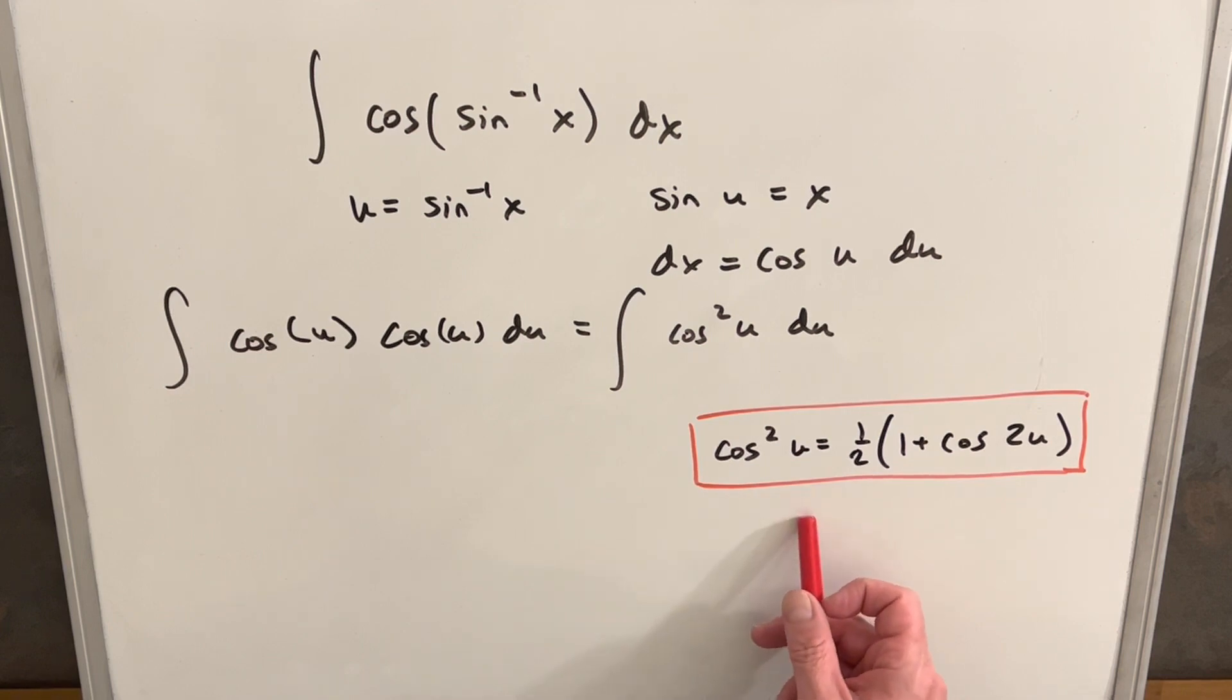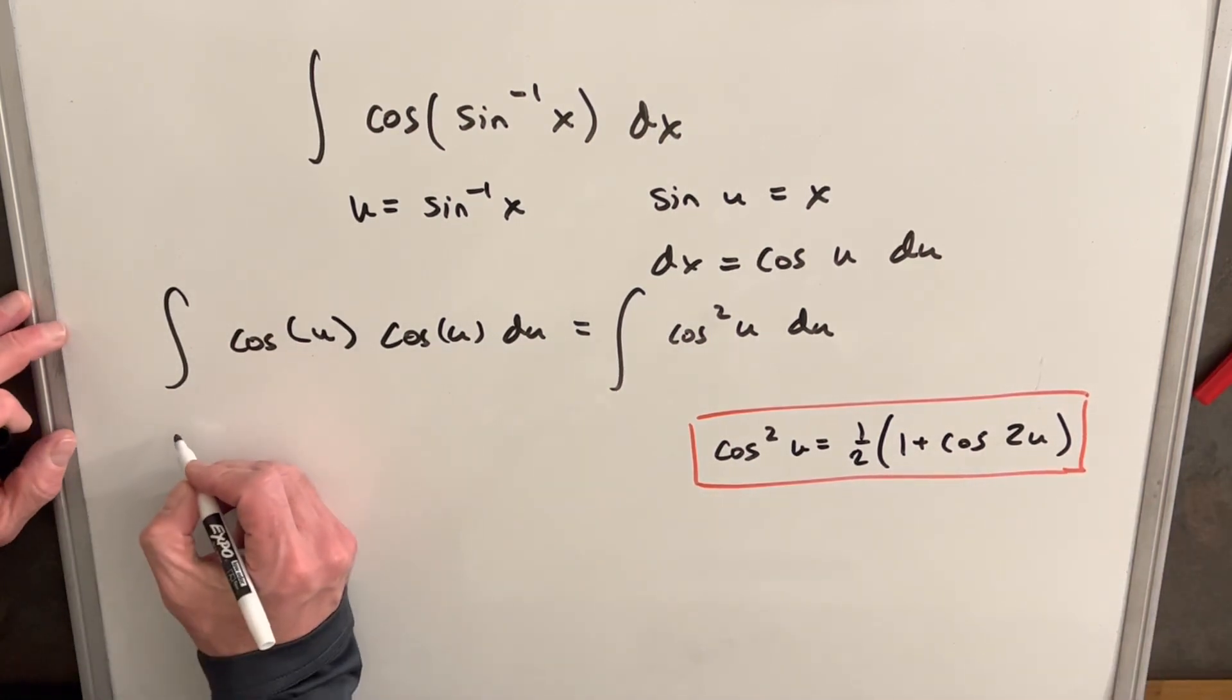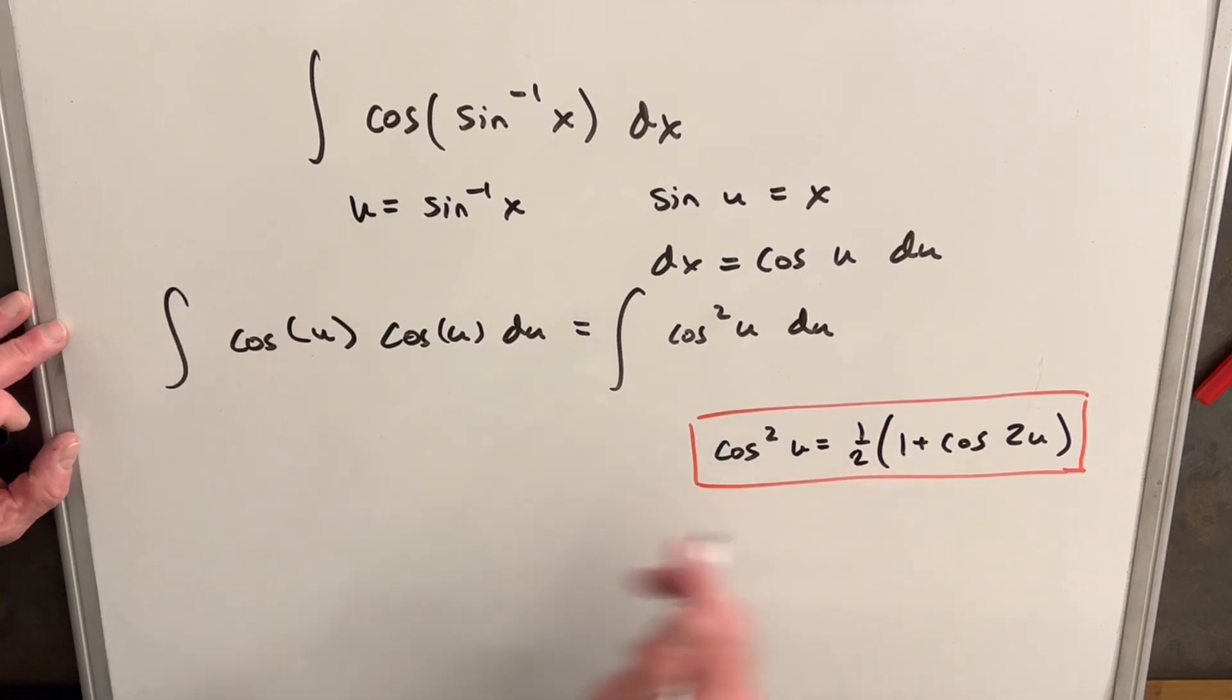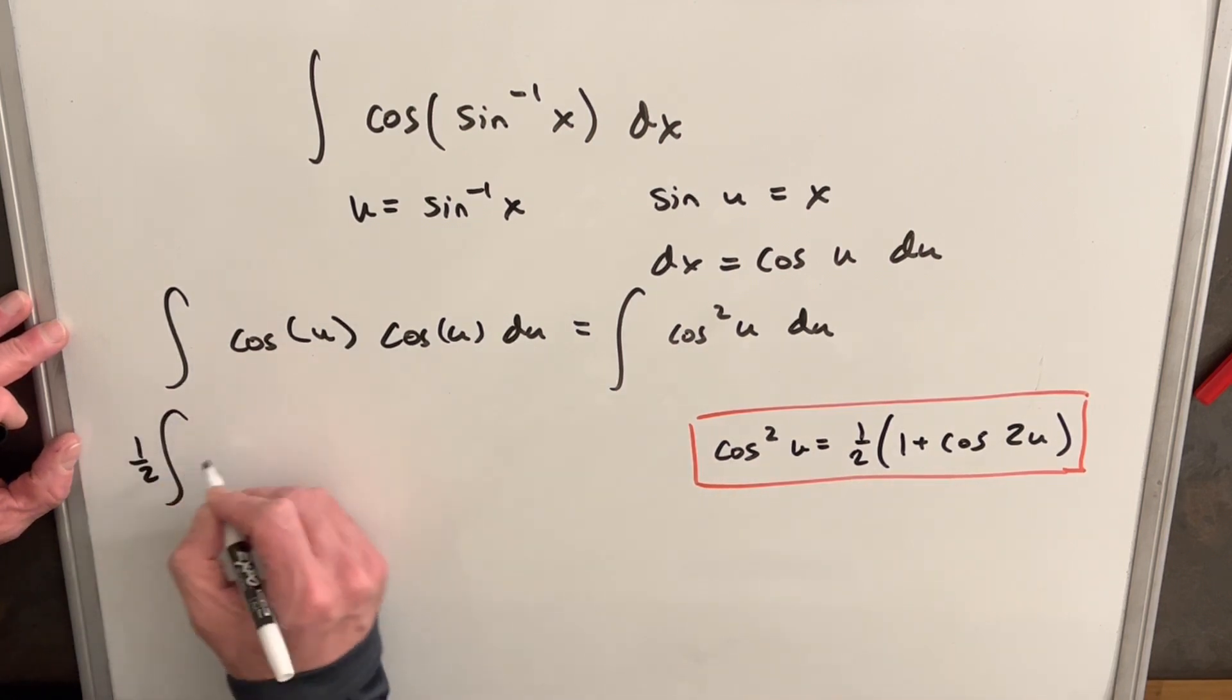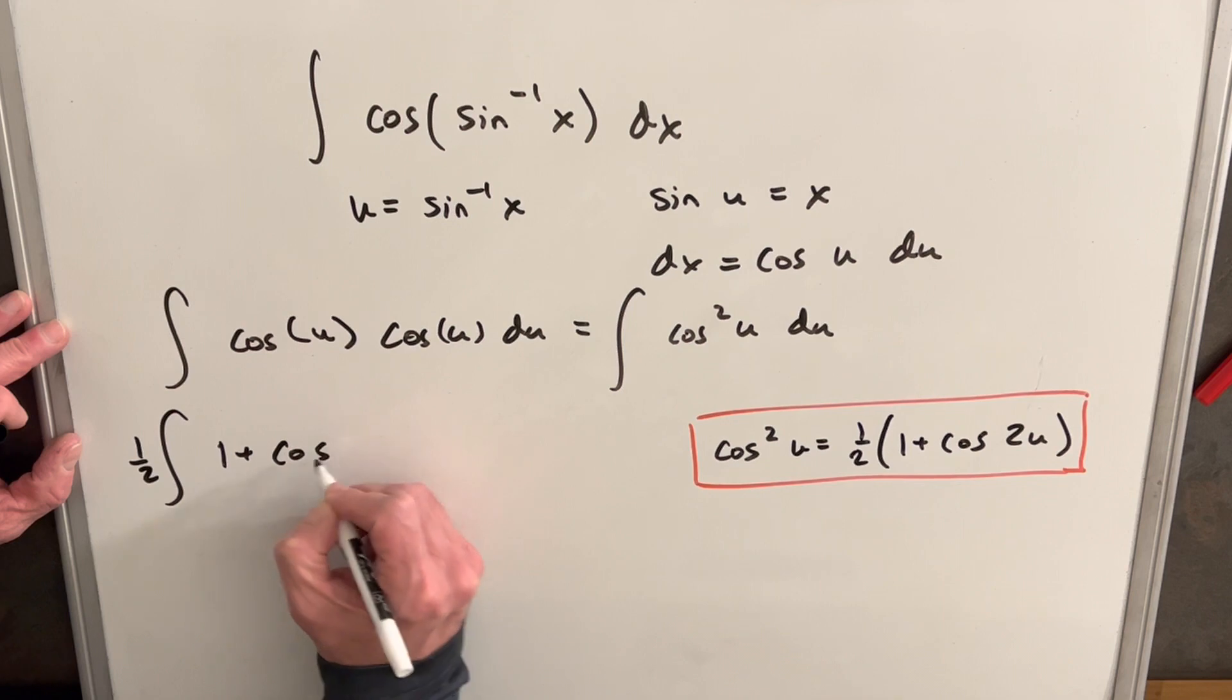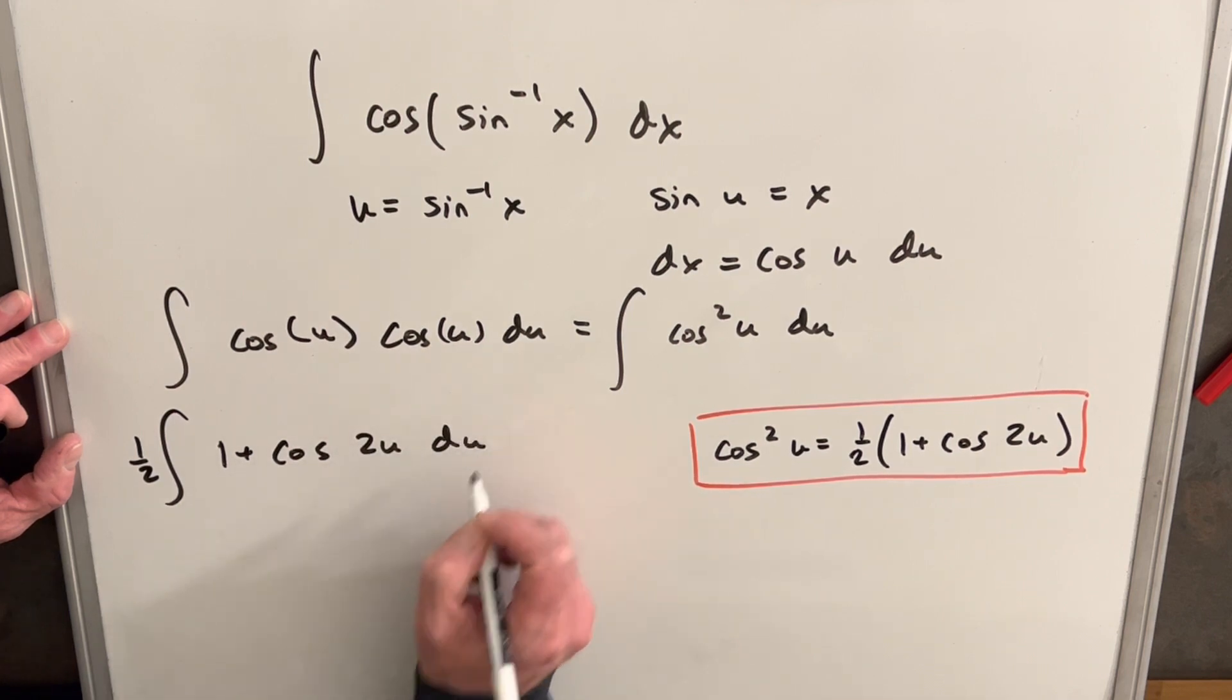But then I've got this nice formula here that I can use to reduce the power on the cosine function. So we can now rewrite this, I'm going to take, when we use the half angle, bring the half out front, and we're going to write this as 1 plus cosine 2u du.